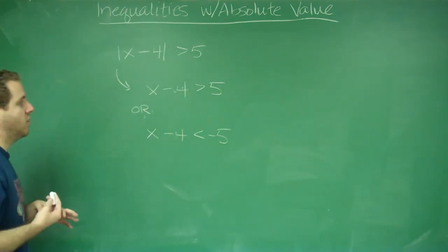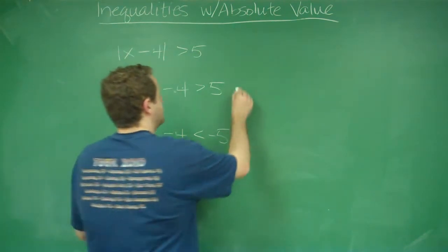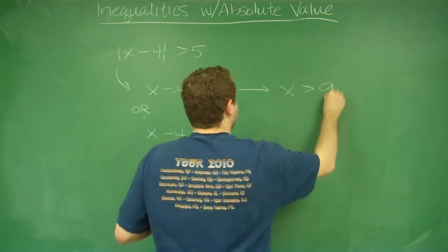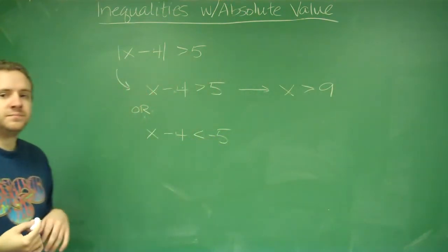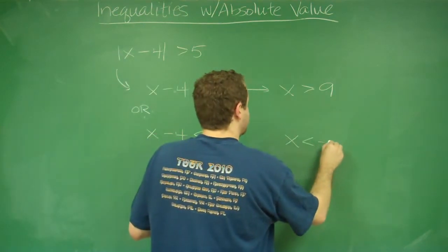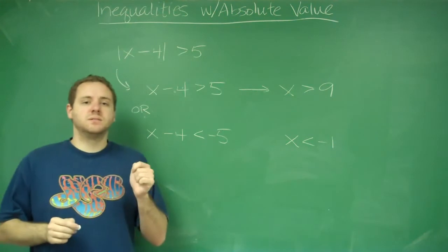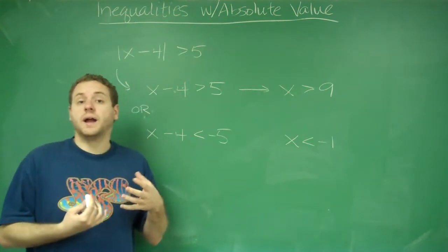So now let's solve these inequalities. All we need to do is add 4 to each one. So this gives you x is greater than 9. Over here if we add 4 we get x is less than negative 1. So both of these ranges are correct for this.